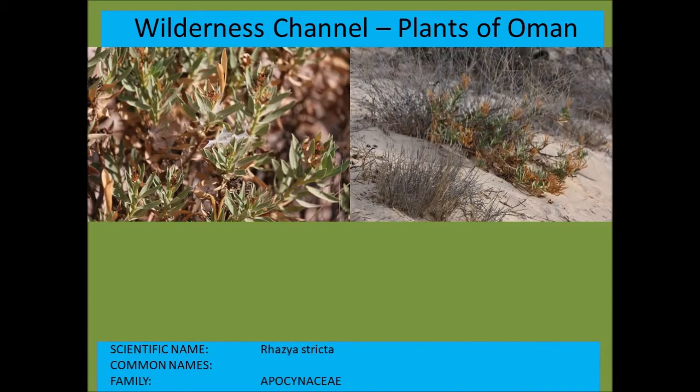Rhazya stricta is a common weed that grows in many desert areas, forming large little bushes with very characteristic pods typical of the Apocynaceae — the oleander family.